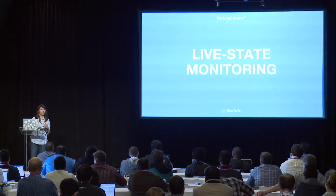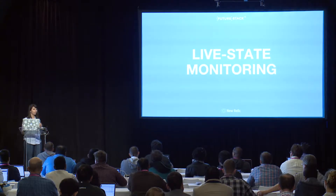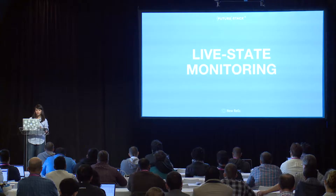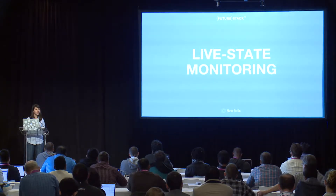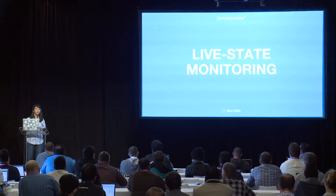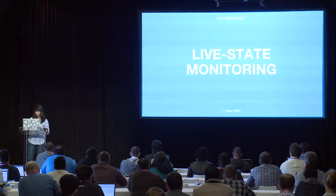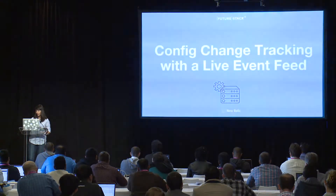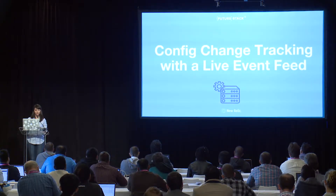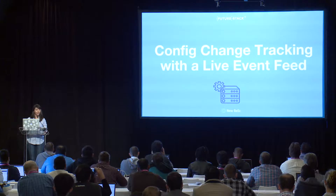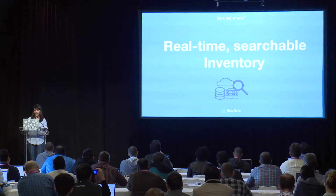Now that we have a high-level overview of what metrics the agent collects, I'm going to walk through how you can use these metrics along with the live state monitoring features that infrastructure provides to get better context — not just what's changing, but why it's changing. I'm going to walk through config change tracking with a live event feed and a real-time searchable inventory.